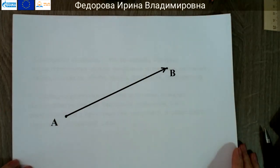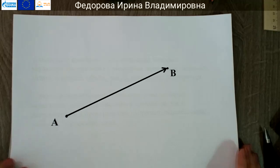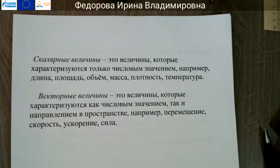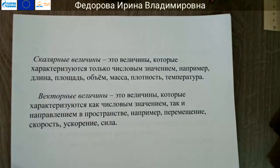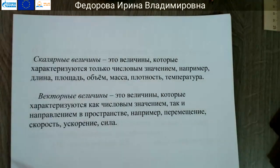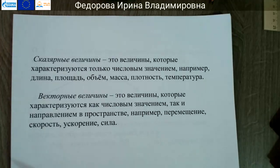В 9 классе вы изучаете механику и будете изучать векторные величины: скорость, силу, перемещение и так далее. Итак, скалярные величины — это величины, которые характеризуются только числовым значением. Например: длина, площадь, объём, масса, плотность, температура. Векторные величины — это величины, которые характеризуются как числовым значением, так и направлением в пространстве. Например: перемещение, скорость, ускорение, силы.